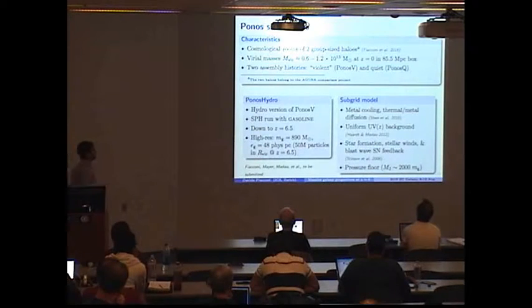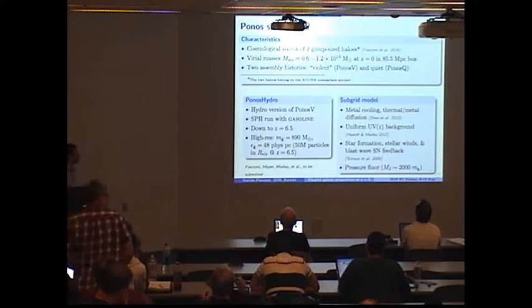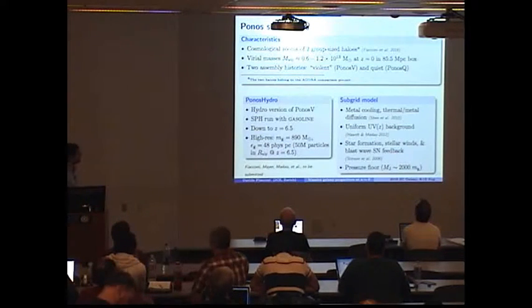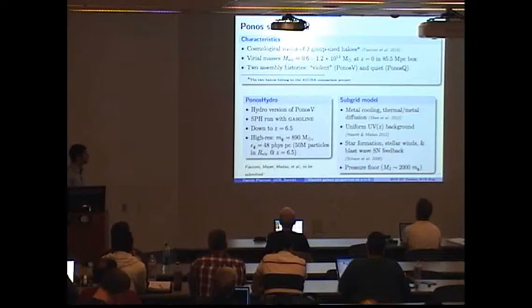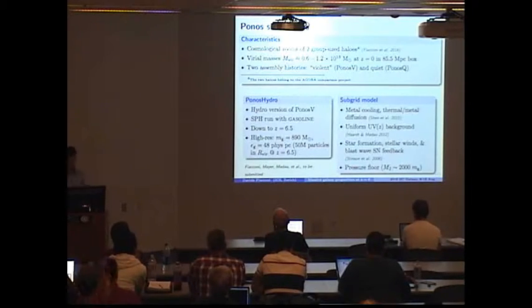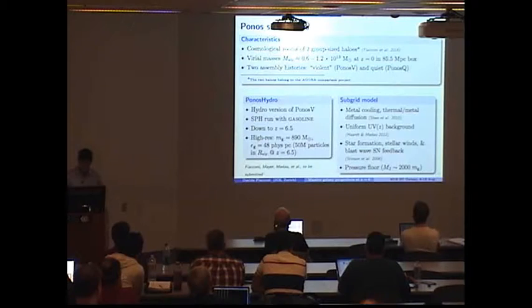So, we tried to look at that with the PONUS simulations, which is a small suite of cosmological zooming simulation on two halos of about 10 to the 13 solar masses today, with two different assembly histories. And one of them, PONUS-P, has been re-simulated with the hydrodynamic SPH code gasoline, which include a fairly rich inventory of sub-grid physical models to treat gas cooling, star formation, and supernova feedback. So, the new run, PONUS-Hydro, have been run down to redshift 6.5 at fairly high resolution, something about 900 solar masses per gas particle, sampling in the end the virial volume at redshift 6.5 with about 50 million particles.